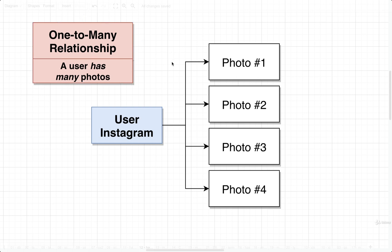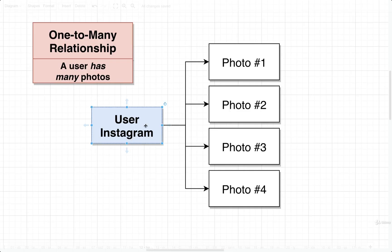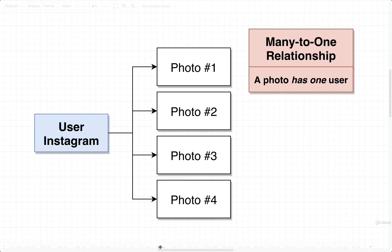Let's take a look at another kind of relationship that's really just the same one, just kind of the opposite. If we look at this relationship from the perspective of a photo, then we might say that a bunch of different photos belong to one user, or a single photo has one user. We would refer to this as a many-to-one relationship. Notice that out of these first two relationships — one-to-many and many-to-one — they're the exact opposite of each other, and it really just depends upon which perspective you are looking at the relationship from. If you're looking from the perspective of a user, it is a one-to-many relationship; from the perspective of a photo, it is a many-to-one.